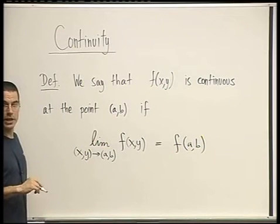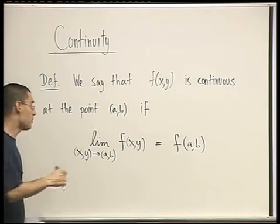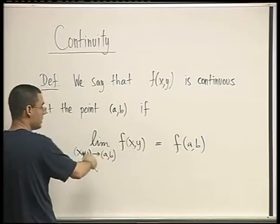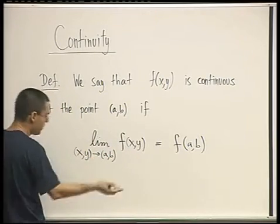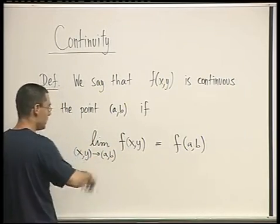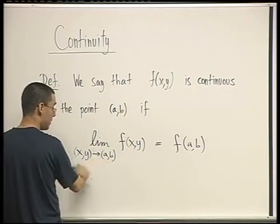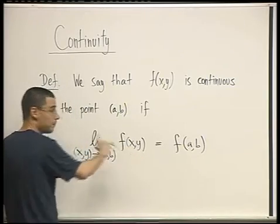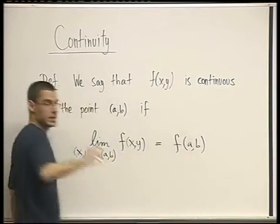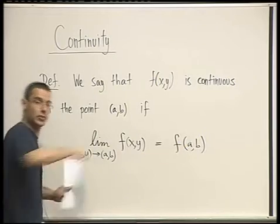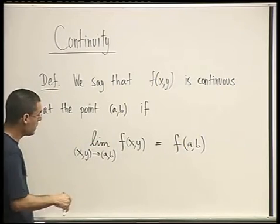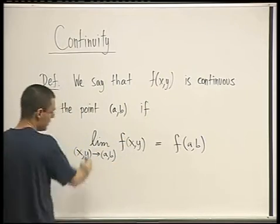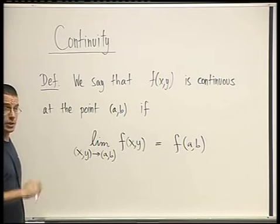Right? Does everybody recognize this? And you could, of course, insert into this expression the definition of the limit. So you can say, if for any epsilon there exists a delta, such that if the distance between (x,y) and (a,b) is less than delta, then the distance between f(x,y) and now, not L, but f(a,b) is less than epsilon. Okay? So you can insert the definition of the limit into the definition of continuity and get a more complicated statement. But this is it. This is the definition. Clear?